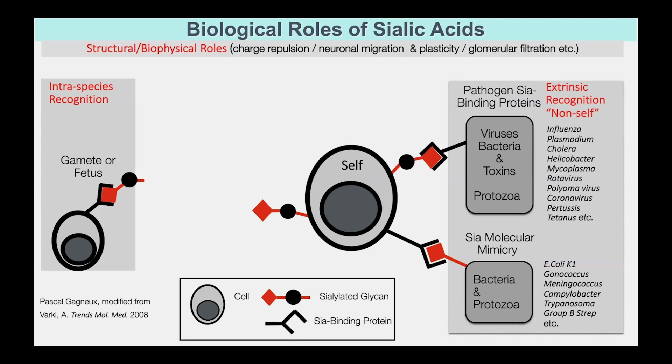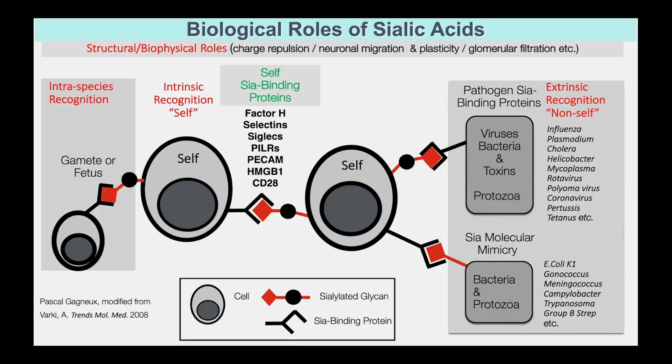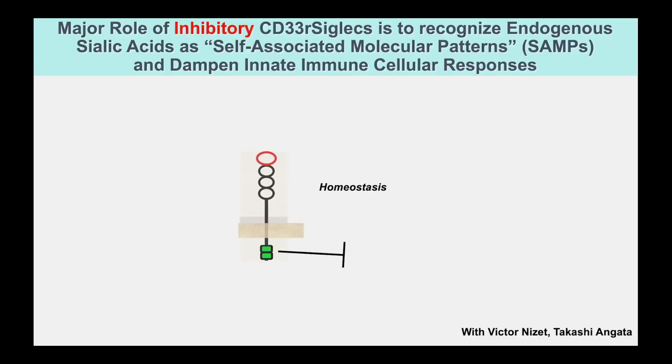For a long time, this is all that was known. So if this were the sole purpose of sialic acid, why would it persist for more than 500 million years in evolution? It's bad for you, right? It turns out there are proteins that actually recognize sialic acid inside your system, which are critical. More recently, we and others have been looking at these molecules — the particular class called siglecs. The major role of these siglecs is to recognize endogenous sialic acid and self-associated molecular patterns. They inhibit and dampen the innate immune cell response.